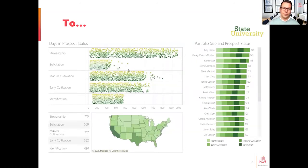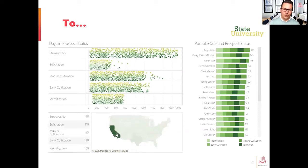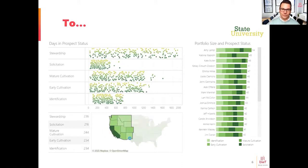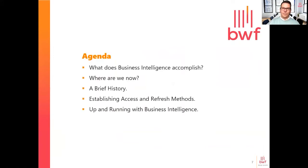We want to avoid having to call somebody to ask questions about anomalies, and really create a full self-service operation for individual users — something they can engage with, see anomalies really quickly, and then ask questions by selecting or changing filters. Today we're going to talk briefly about what business intelligence accomplishes, where we are now as a collective with some polling, a brief history, how we're going to connect with our data, various refresh methods, and then we'll get up and running with a Power BI demo.